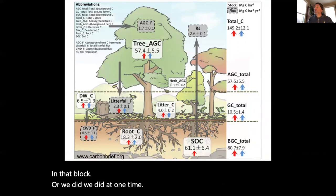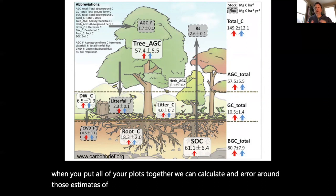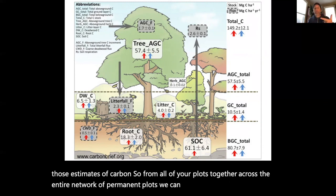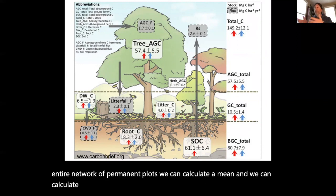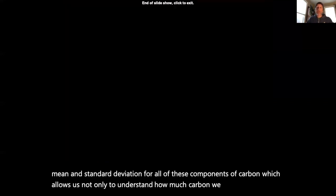Just like in this graphic here, we're simply putting numbers together. When you put all of your plots together, we can calculate an error around those estimates of carbon. From all of your plots together across the entire network of permanent plots, we can calculate a mean and a standard deviation that would be equivalent to coming up with a mean and standard deviation for all of these components of carbon, which allows us not only to understand how much carbon we have, but we can also understand how variable it is.